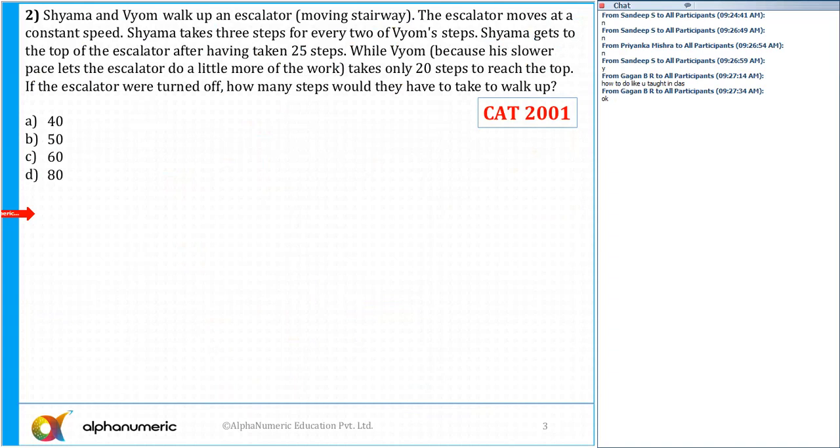What is the correct answer for question number two? The correct answer for question number two is option number B, which is equal to 50. Let's see how it is.